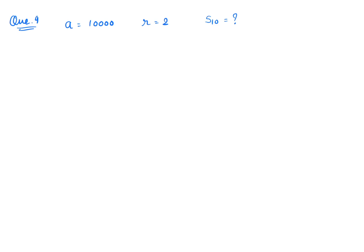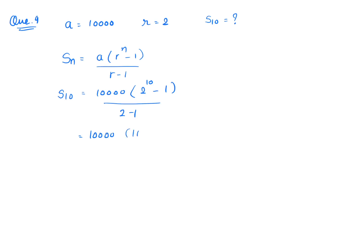Using the formula Sn = a(r^n - 1)/(r - 1), we find S10: a = 10,000, r = 2, n = 10. S10 = 10,000 × (2^10 - 1)/(2 - 1) = 10,000 × (1024 - 1)/1 = 10,000 × 1023 = 1,02,30,000. So the final total amount up to the 10th installment is 1 crore 2 lakh 30,000 rupees.